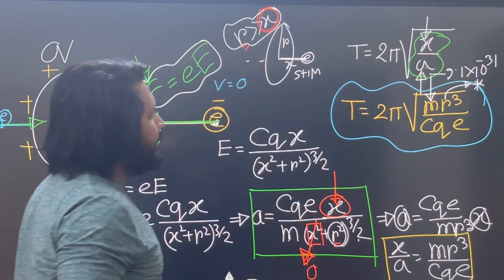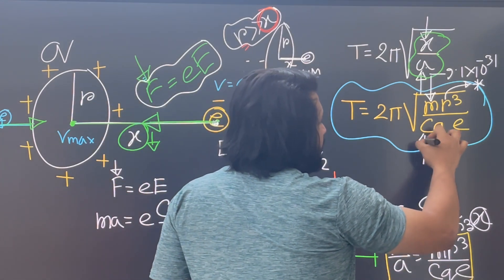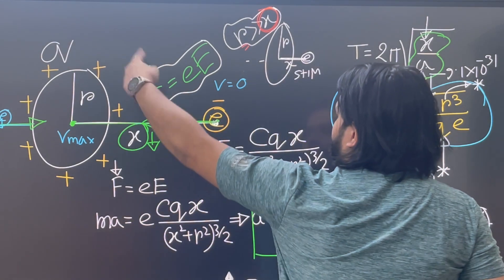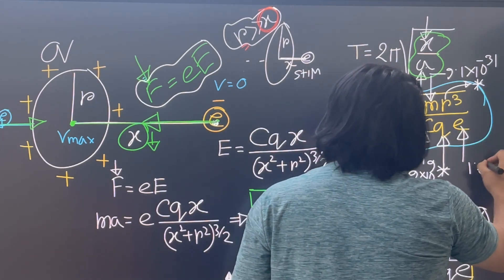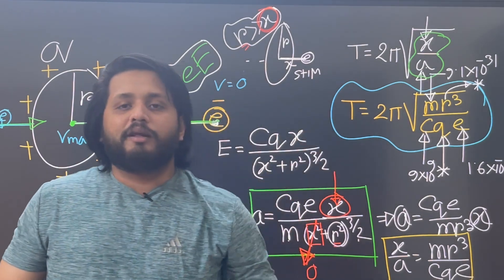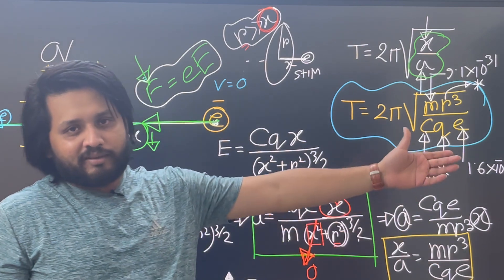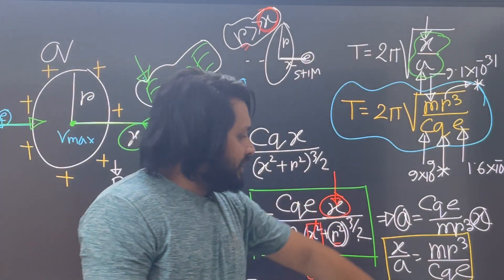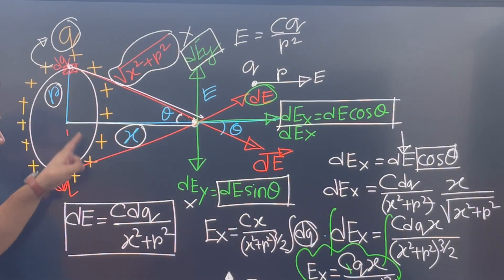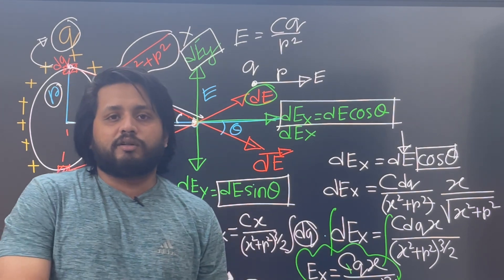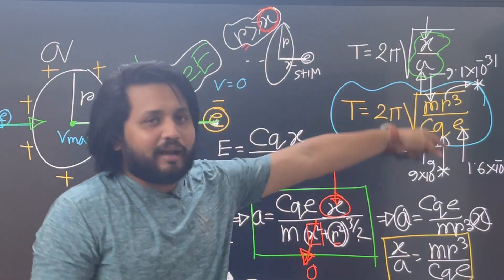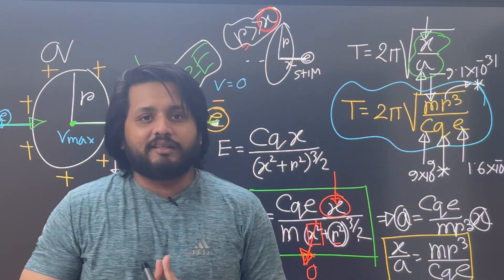R cubed gives us the radius to the power 3. Here k is 9×10⁹, Q is the full ring charge, and e is 1.6×10⁻¹⁹ coulombs. So when you have a ring of charge with an electron on its axis, you get simple harmonic motion. Isn't it amazing? This is definitely at academic standard.